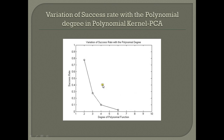This graph shows the variation of the success rate of the polynomial kernel PCA with the degree of the polynomial kernel. It can be seen that as the degree is increased from 2 to 6, the performance gradually decreases drastically. Thus, the polynomial kernel of degree 2 gives the best performance among the kernel PCA variants tested.